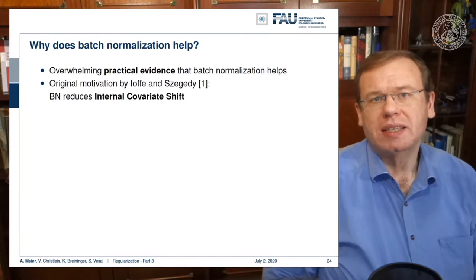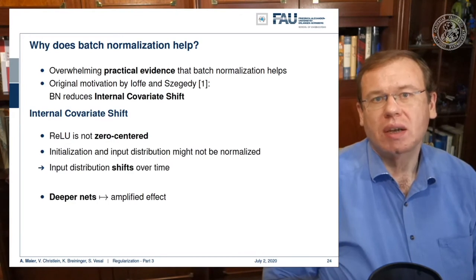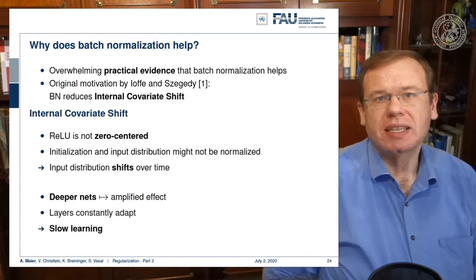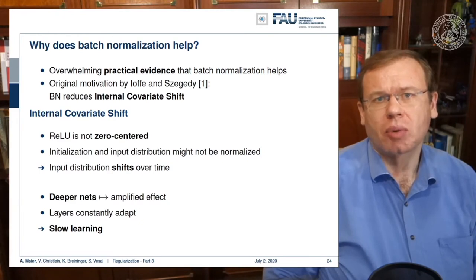You may argue why does batch normalization actually help? There's overwhelming practical evidence that it's really a useful tool and it has been originally motivated by the internal covariate shift. So the problem that the ReLU is not zero-centered was identified. Hence, initialization and input distribution may not be normalized. Therefore, the input distribution shifts over time. In deeper nets, you can even get an amplified effect. As a result, the layers constantly have to adapt and this leads to slow training. Now, if you look at these observations closely, there is very little concrete evidence to support this theory.